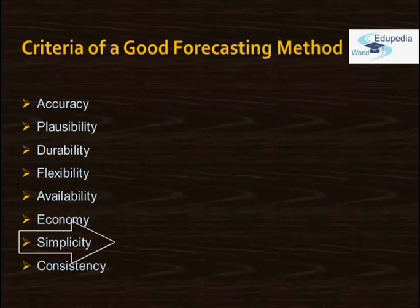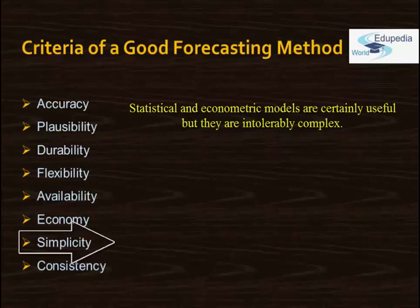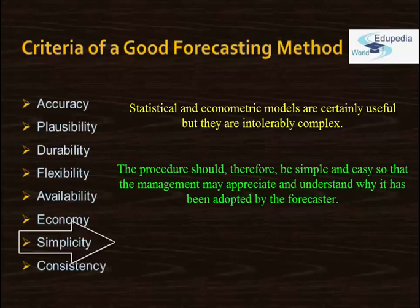Simplicity is also important. Statistical and econometric models are certainly useful, but they are intolerably complex to those executives who have a fear of mathematics — these methods would appear to be Latin or Greek to them. The procedure should therefore be simple and easy so that management may appreciate and understand why it has been adopted.